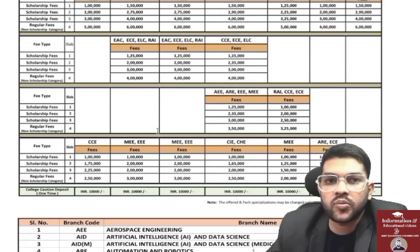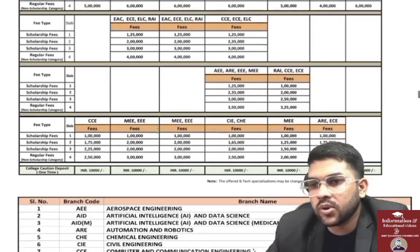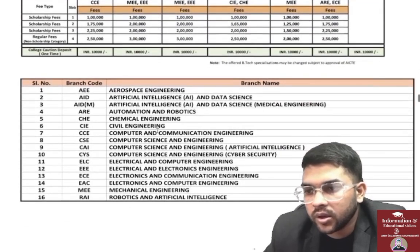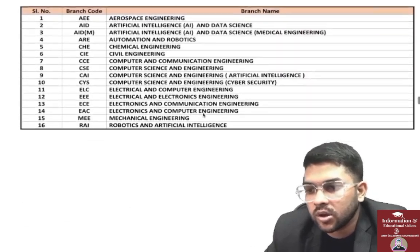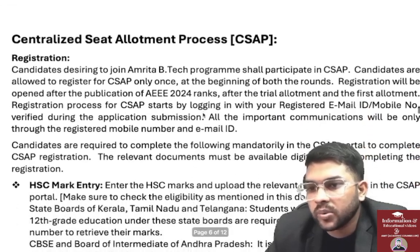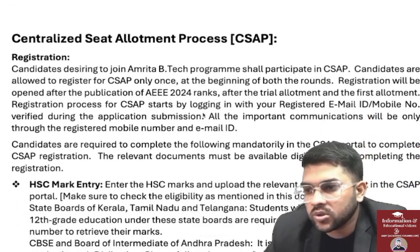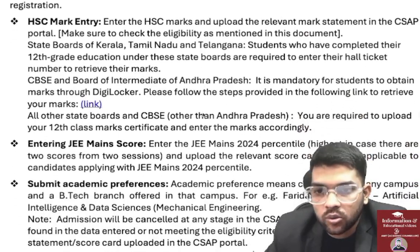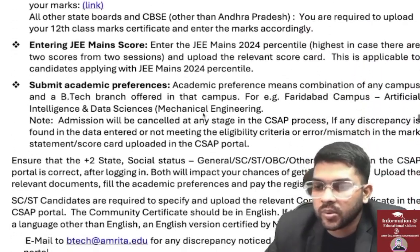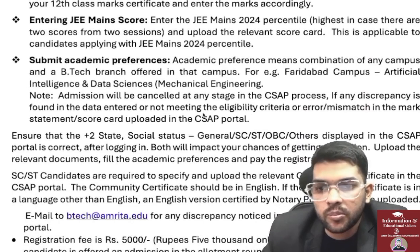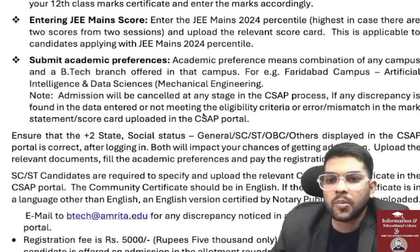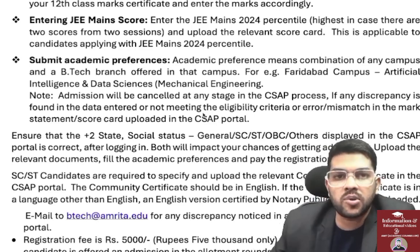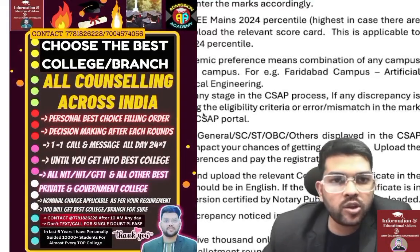Be very careful while doing the choice filling — you have to do it correctly and carefully, otherwise you may end up in a higher fee slab. You can also check the slab-wise fees for other branches. Regarding the CSAP registration process: first, register with your email, then provide your 12th marks, submit academic preferences. Wrong preferences will directly affect your allotment.